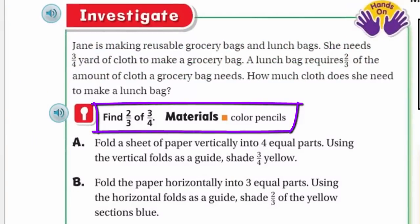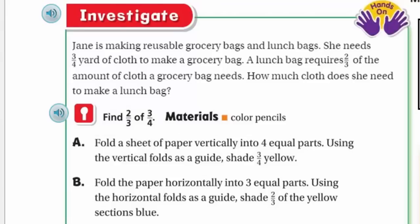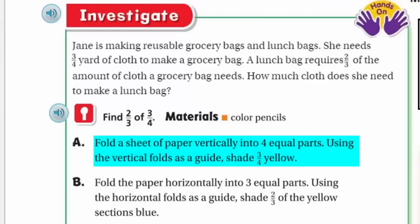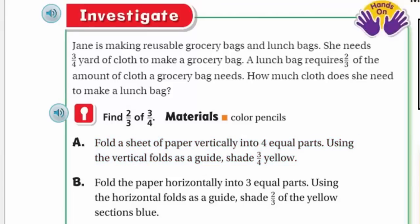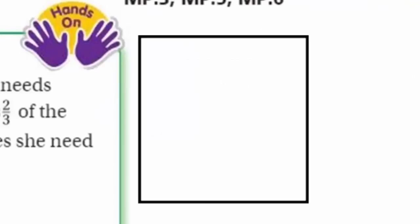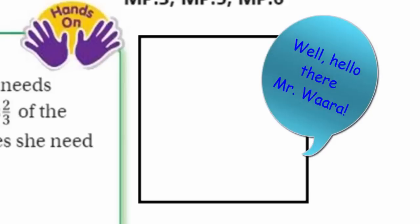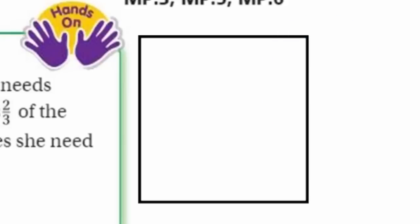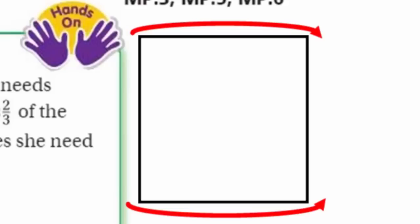It says fold a sheet of paper vertically into four equal parts. Using the vertical folds as a guide, shade three-quarters yellow. So let's take this step by step. I don't have paper I can put in front of you, so what I've done is I've drawn what looks like a square — probably a rectangle — and that's my piece of paper. And it says we're going to fold it vertically into four equal parts, going in the direction of the arrow like a cross.